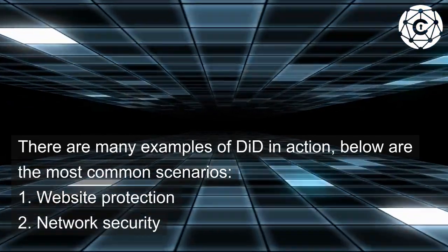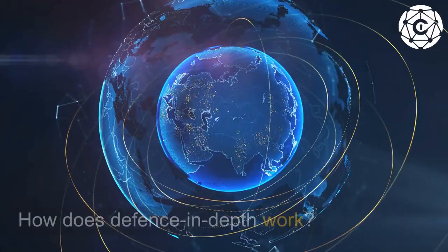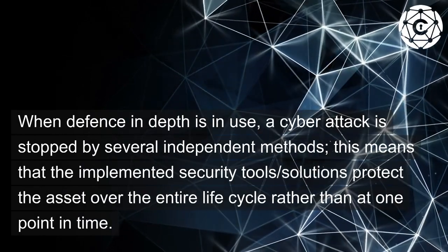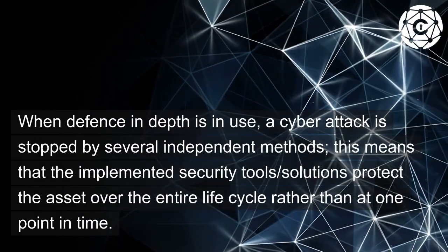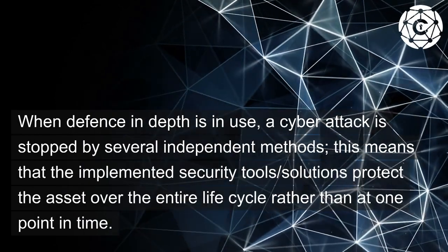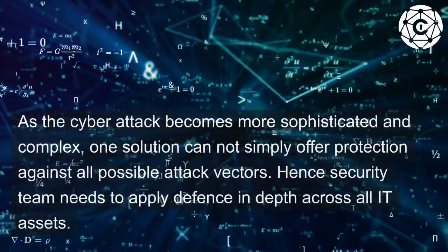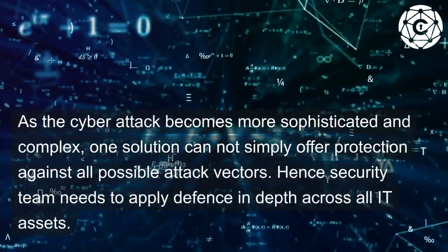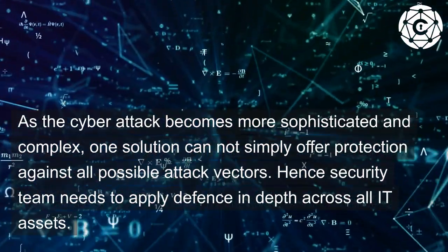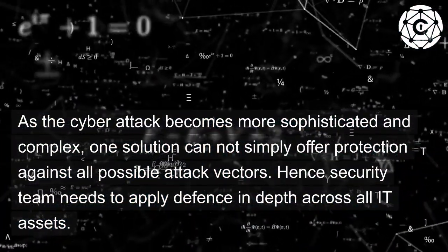What are examples of defense in depth application layer? There are many examples of DiD in action. The most common scenarios are: 1. Website protection. 2. Network security. When defense in depth is in use, a cyber attack is stopped by several independent methods. This means that the implemented security tools and solutions protect the asset over the entire life cycle rather than at one point in time. As cyber attacks become more sophisticated and complex, one solution cannot simply offer protection against all possible attack vectors, hence the security team needs to apply defense in depth across all IT assets.